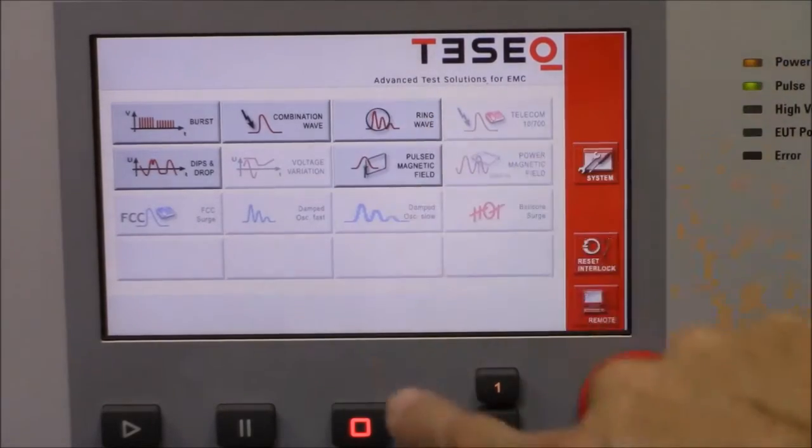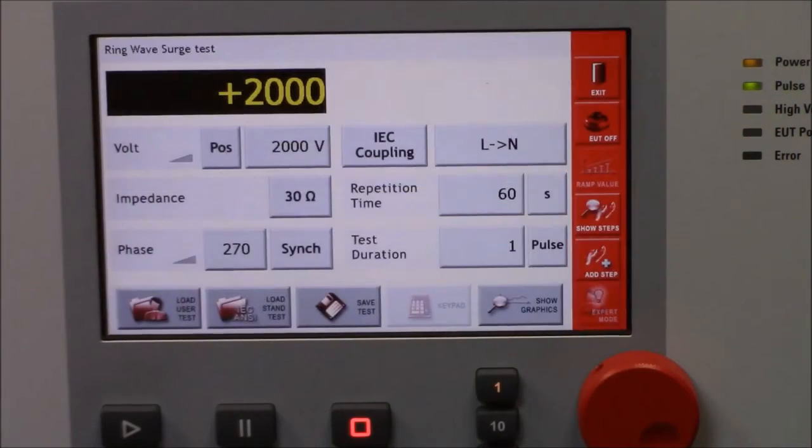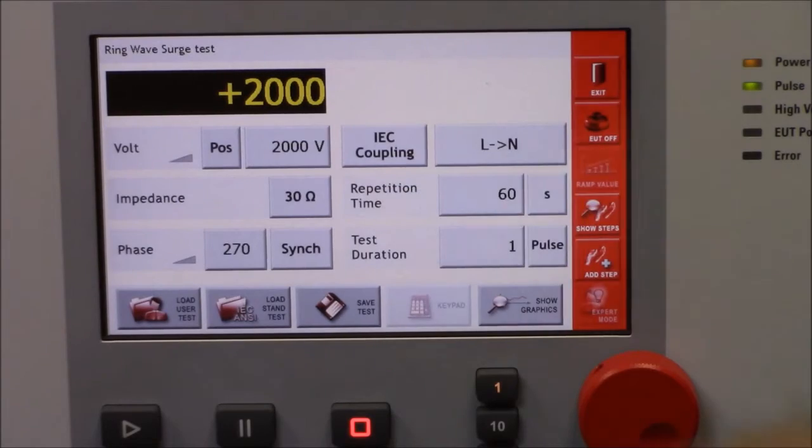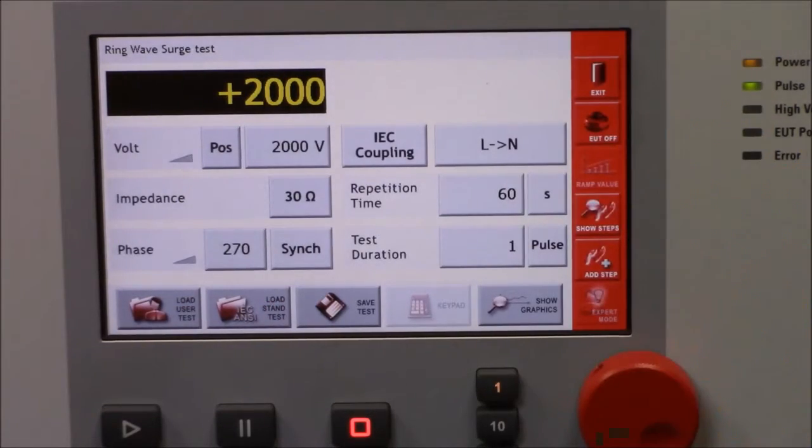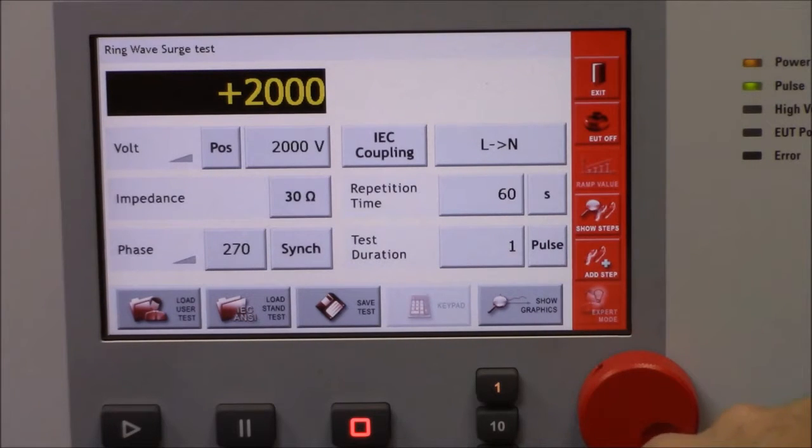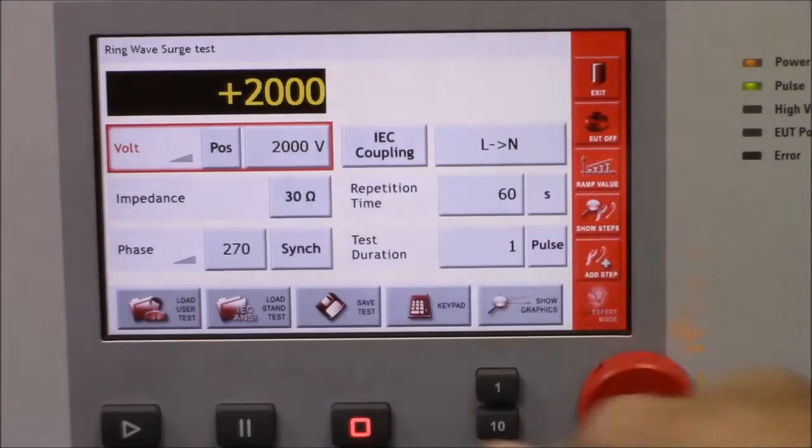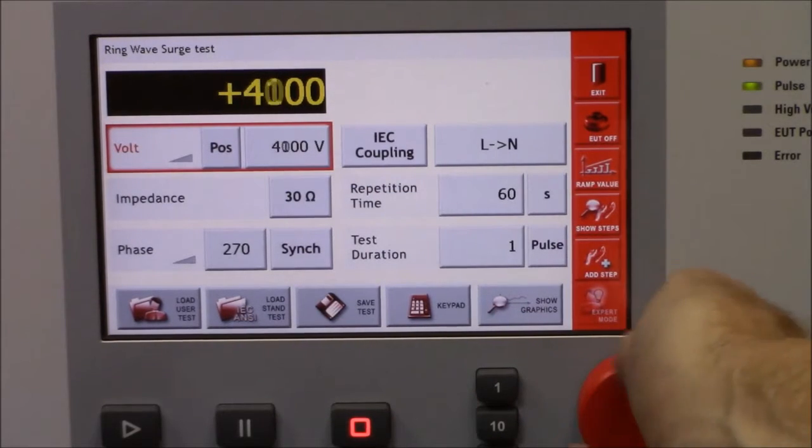The other standard wave shapes are the ring wave, which is the 100 kilohertz. Here 270 degrees, 2,000 volts, line to neutral, capable of changing the voltage to go up to the full 6,000 volts, 500 amps on the ring wave test.